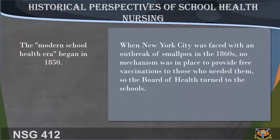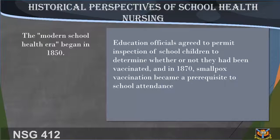When New York City was faced with an outbreak of smallpox in the 1860s, no mechanism was in place to provide free vaccinations to those who needed them, so the board of health turned to the schools. Education officials agreed to permit inspection of school children to determine whether or not they had been vaccinated.